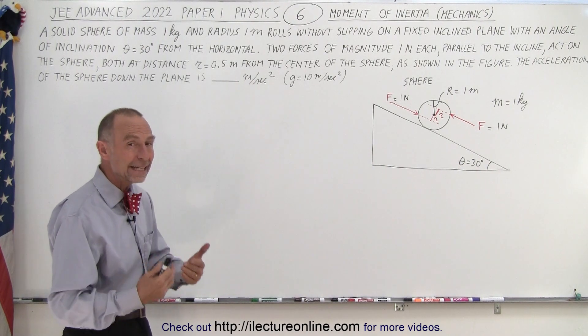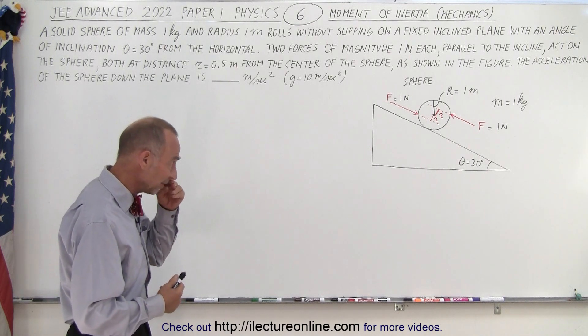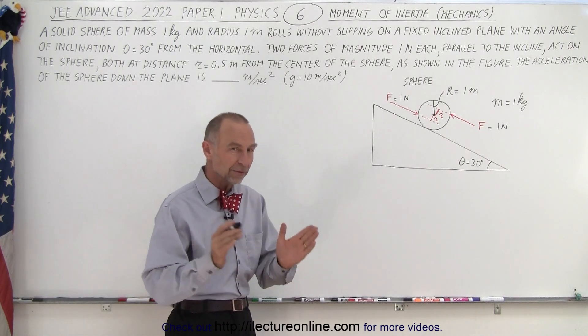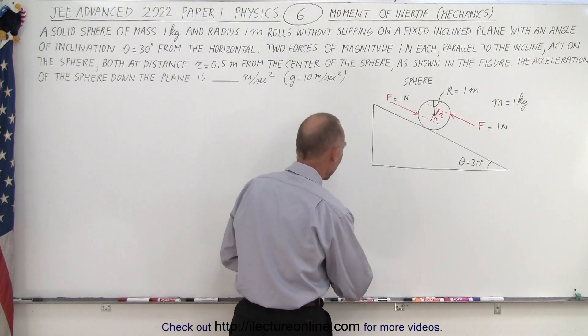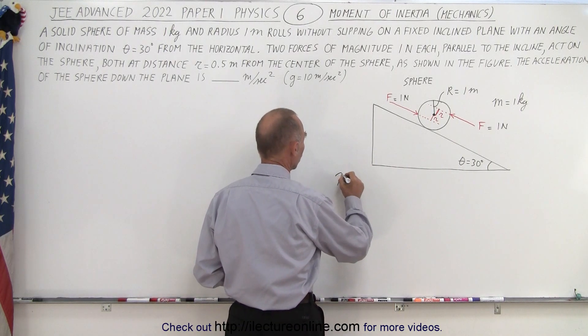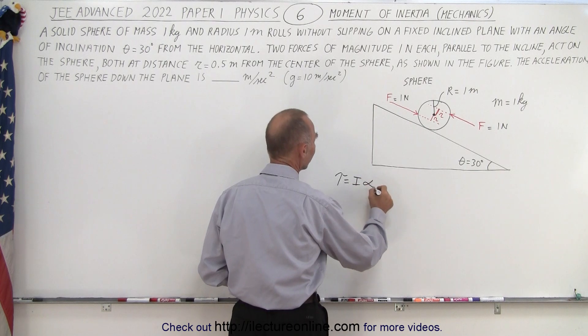So, what kind of technique do we need to use to solve that? Well, it turns out we need to use two equations and solve them simultaneously. On the one hand, we use the equation torque is equal to I times alpha,